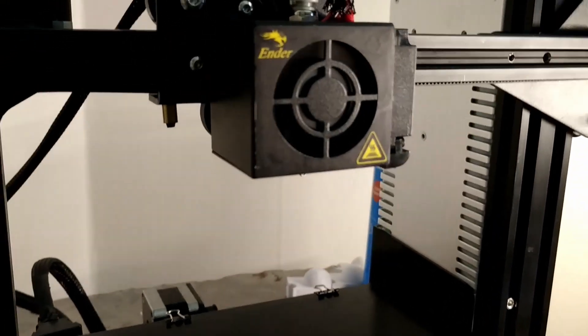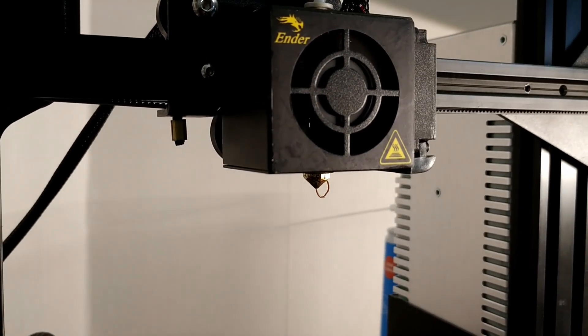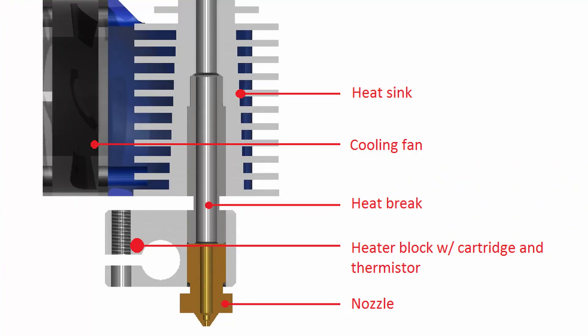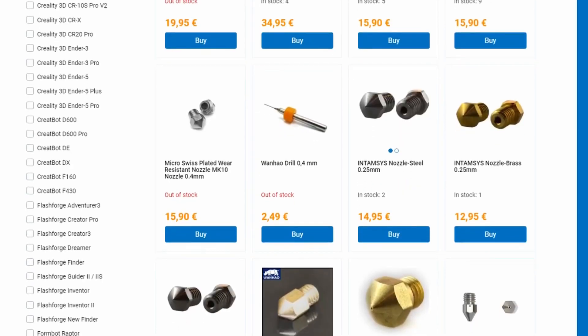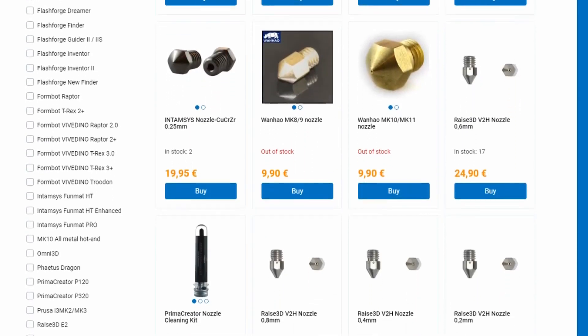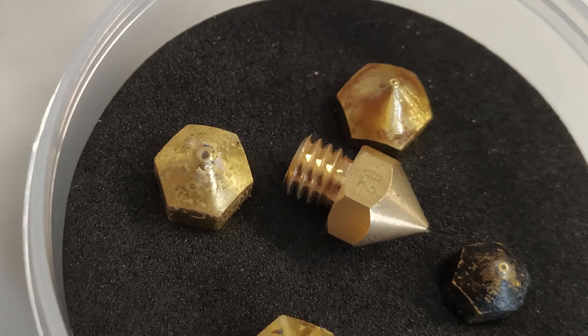The nozzle is the last component that the plastic goes through before ending up on your build area. It's heated to around 200 degrees Celsius normally, and your printer has probably come with a brass nozzle. There are other materials used for special applications, but I will cover that in a different video. It has a thread in one end that connects it to your printer.